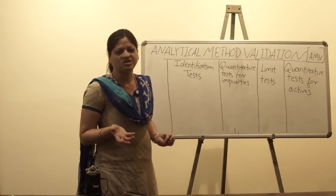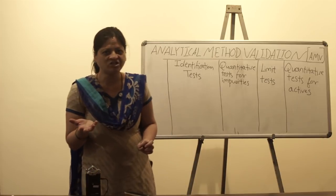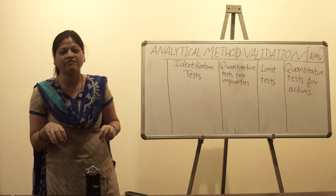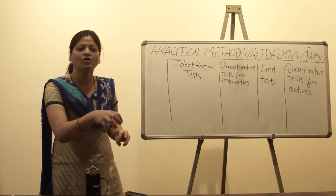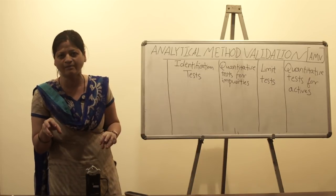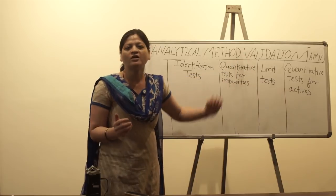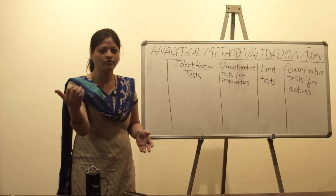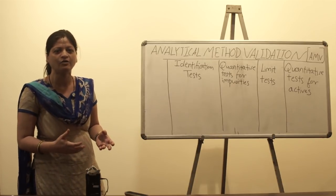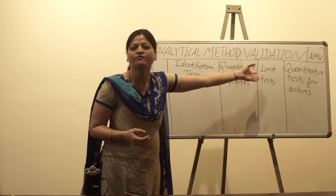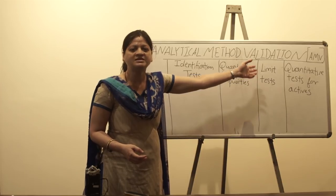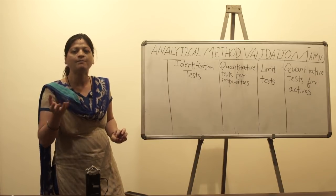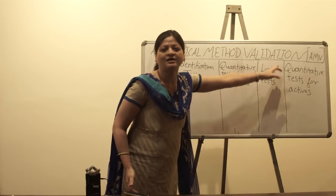Examples of quantitative tests for actives include: performing assay of drug powder or drug in a formulation; determining entrapment efficiency in a nanoparticle formulation where you find the quantity of drug entrapped inside a polymeric matrix; and dissolution tests where you pipette out aliquots at different time intervals and analyze them for presence of active. Any test where you find the amount or concentration of the active substance in a sample matrix falls under this last category.